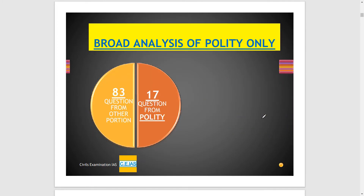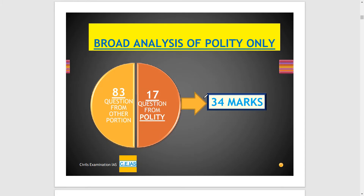If you do a broad analysis of the polity section only, it comprises 17 questions, while 83 questions are from other sections. From these 17 questions, it totally consists of 34 marks. You can easily gain 34 marks just by doing polity itself.